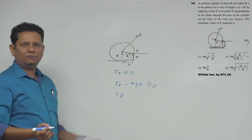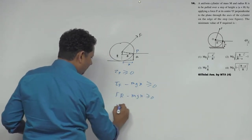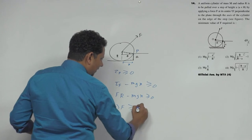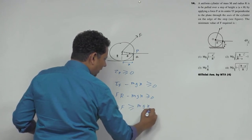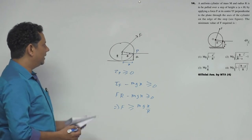F cross r when the angle between them is 90 degrees gives F r sin theta, so F r minus mg x should be greater than or equal to zero, which implies F should be slightly greater than mg x by r. Now the question remains to find the value of x.